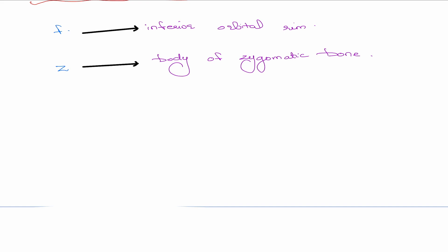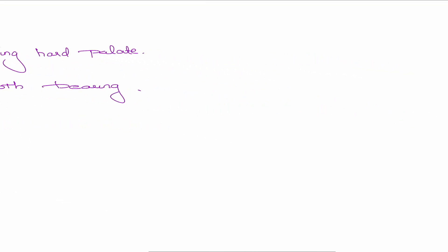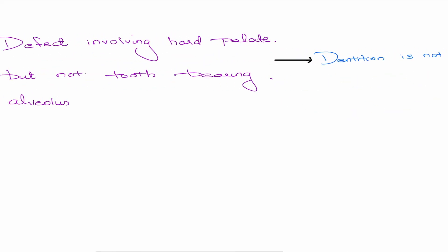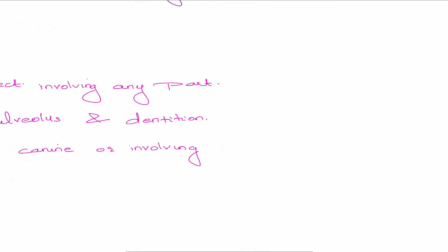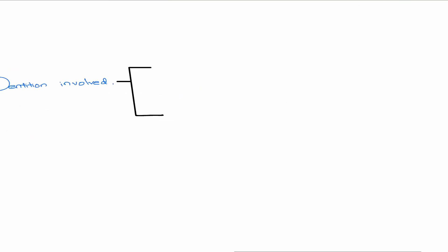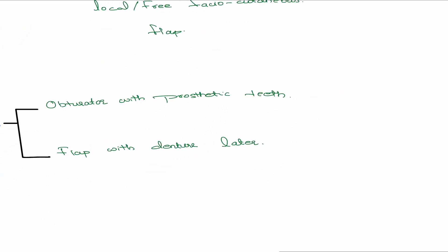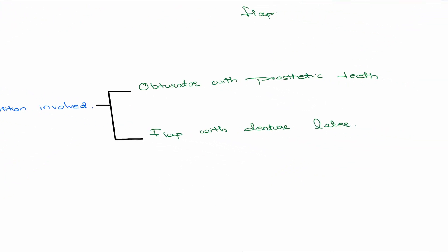Now let's look at reconstruction. For class 1A — not involving the tooth-bearing area — dentition is not lost, so you can simply give an obturator, or a local or free fasciocutaneous flap; not osteocutaneous, just fasciocutaneous. For class 1B — dentition is involved — you need an obturator with prosthetic teeth, or a fasciocutaneous free flap thinking of a denture later on.